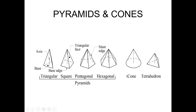Apart from pyramids, you have revolved surfaces — cone, cylinder, and sphere. A cone has a circular base connected by a surface with no edges leading to the apex. Then there is the tetrahedron, which looks similar to a triangular pyramid, but in a tetrahedron all four triangles are equilateral triangles — that is why it is called a tetrahedron.